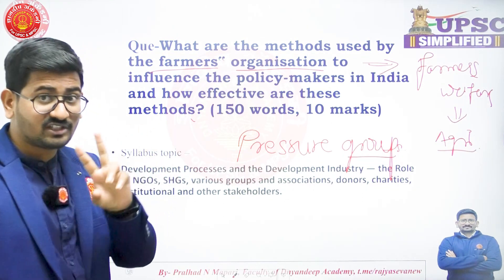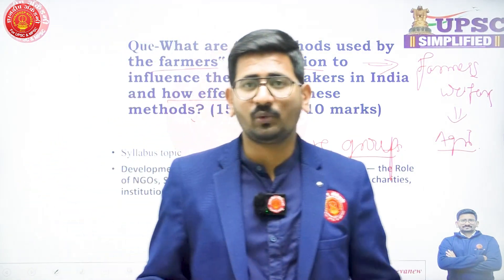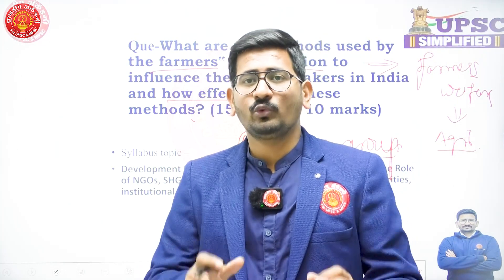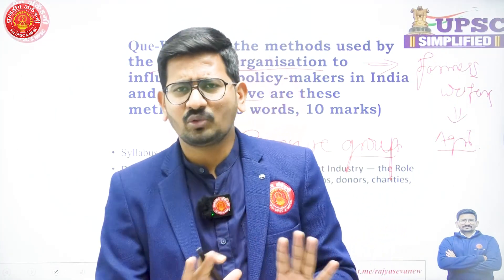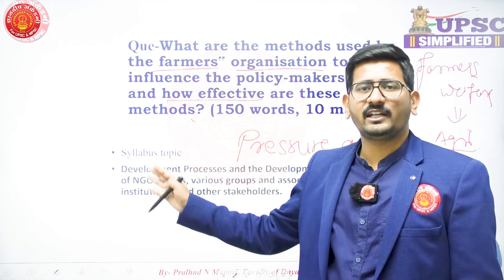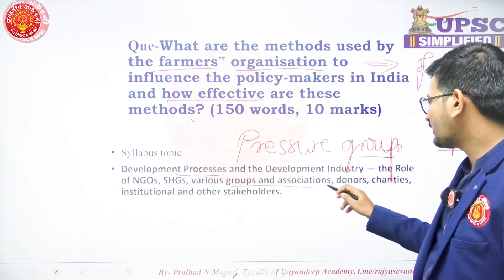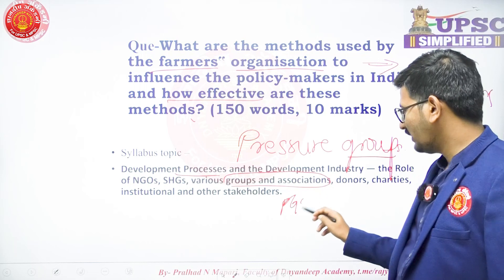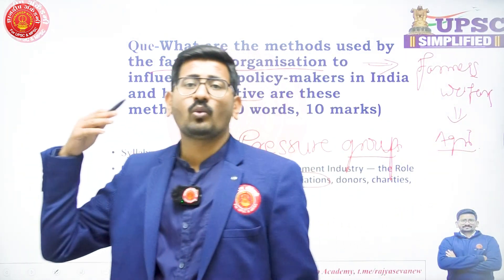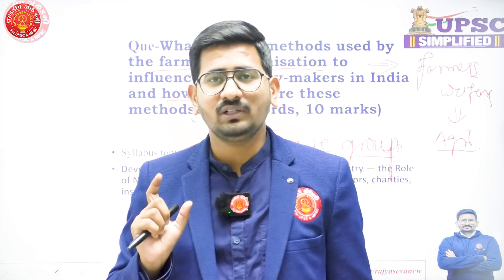There is also a second part of the question: how effective are these methods? We will need to write about that effectiveness. This is a 10-marker question, so we have to write in about 150 words. Our second step is to link it with the syllabus topic, which is 'different groups and associations' — that is, pressure groups. So pressure groups is the syllabus point, and we can start revising content related to pressure groups.